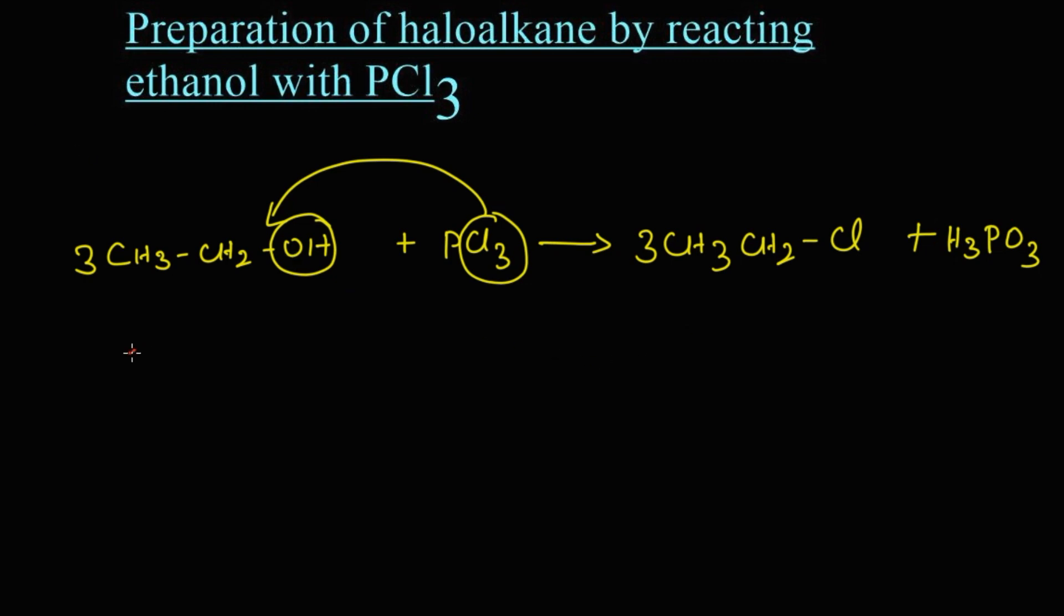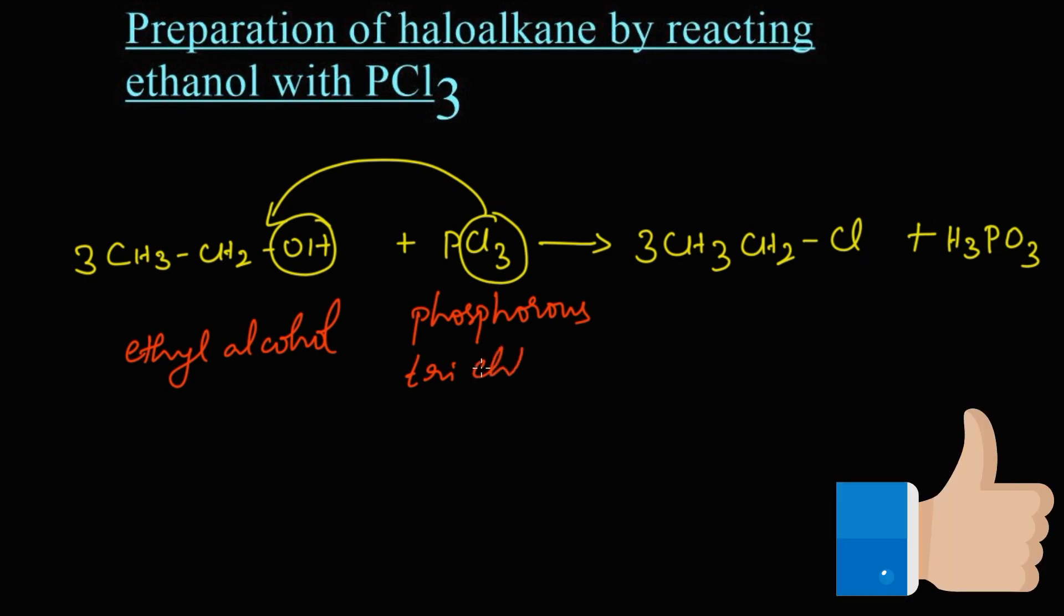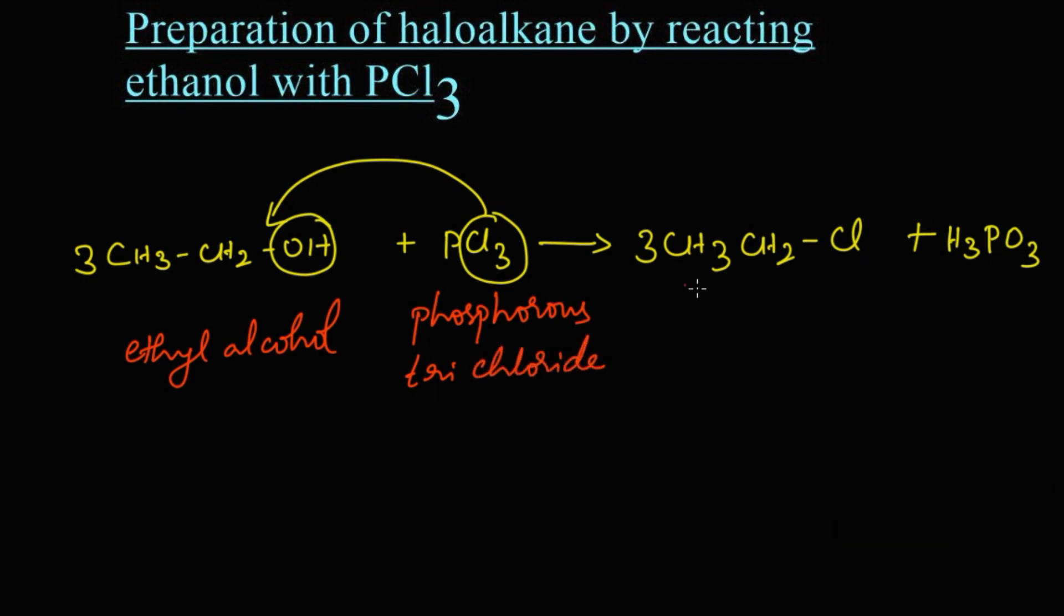Let's write the name for these structures. Ethyl alcohol reacts with phosphorus trichloride. It gives ethyl chloride as the product, or else we shall name it as chloroethane, which is a haloalkane, along with phosphorous acid.